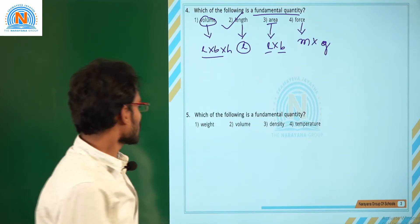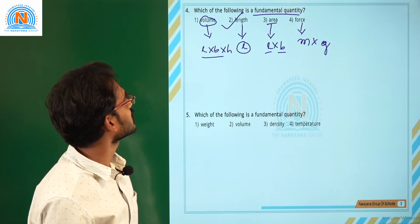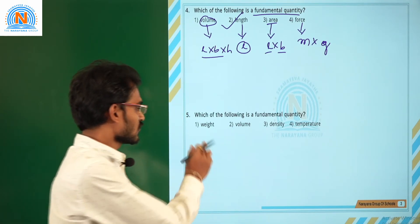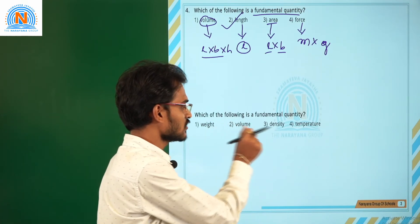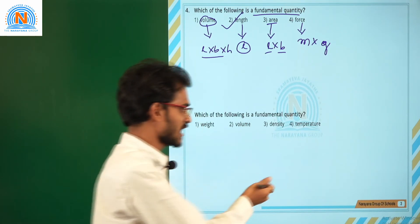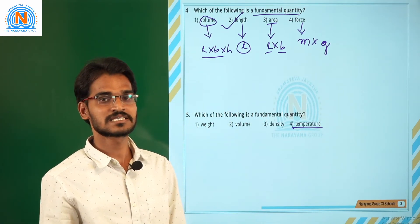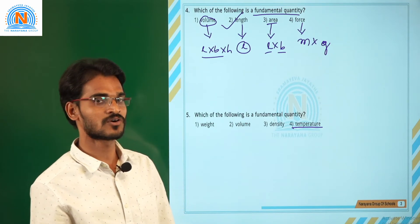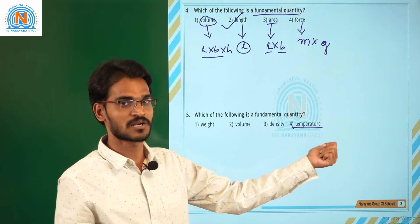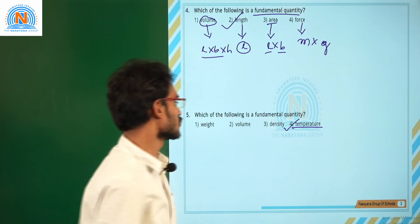Let us move on to the fifth question: which of the following is a fundamental quantity? The options are weight, volume, density, and temperature. We already know there are seven fundamental physical quantities. Temperature is one of them and is independent of remaining other physical quantities. So our correct answer is temperature.